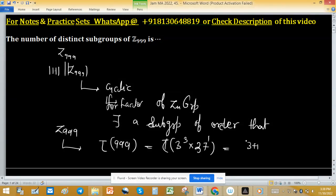Using the tau function formula, this becomes (3+1)(1+1) = 8. So the number of distinct subgroups of Z₉₉₉ is 8.